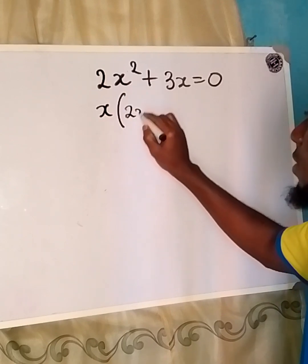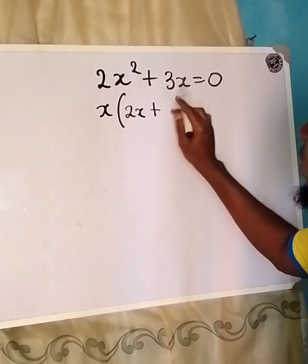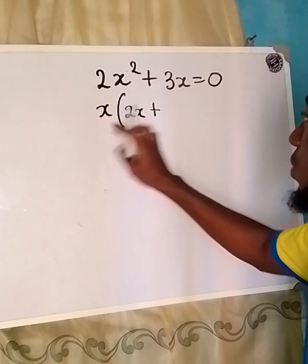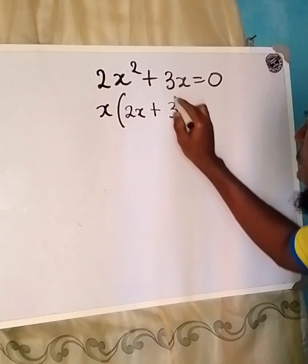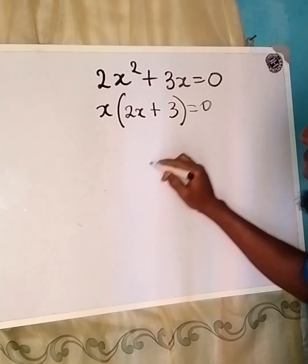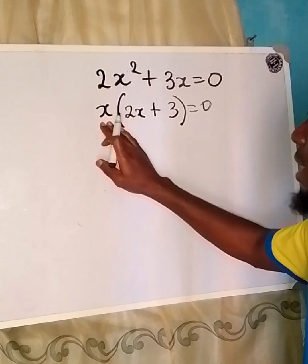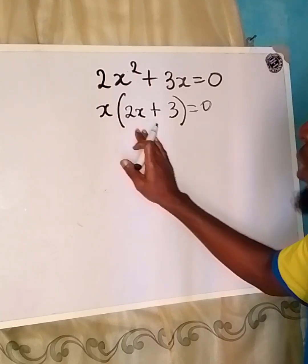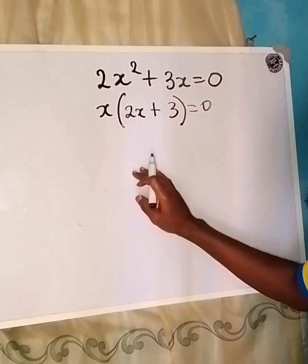Now we are going to have 2x left here, then plus this x is already out. So we'll have just 3 here and this is equal to 0. So now that we are multiplying this and this to get 0, it means that one of this should be equal to 0.